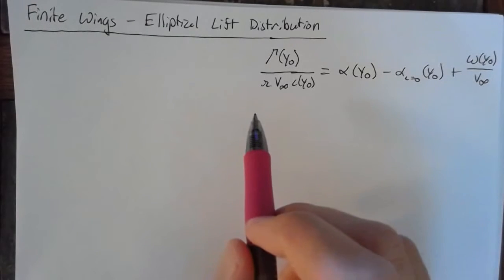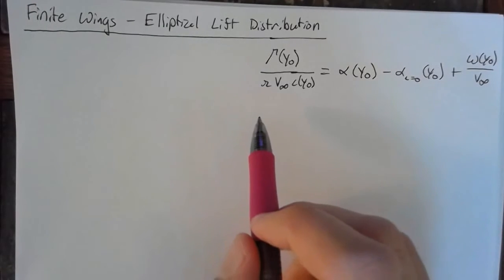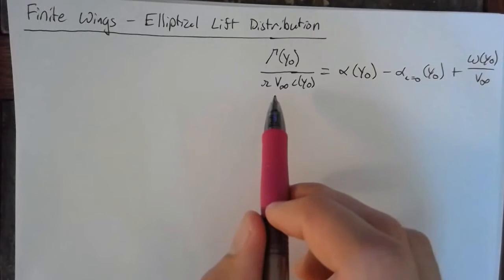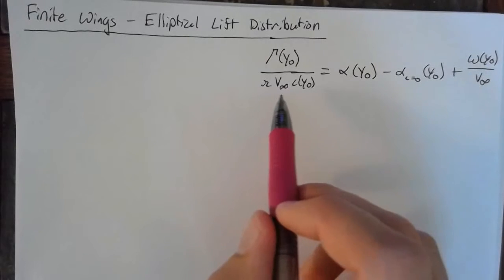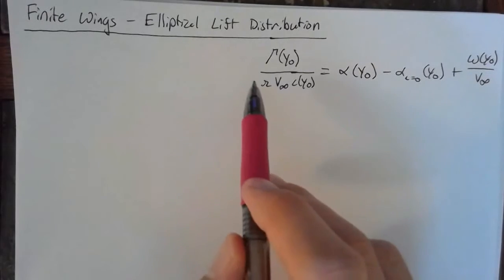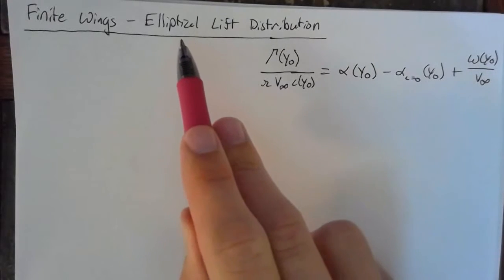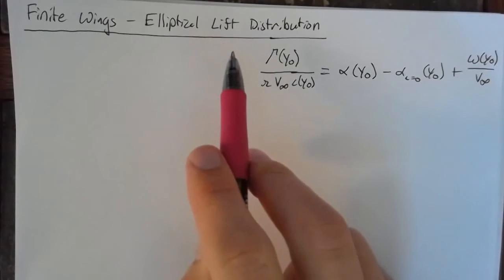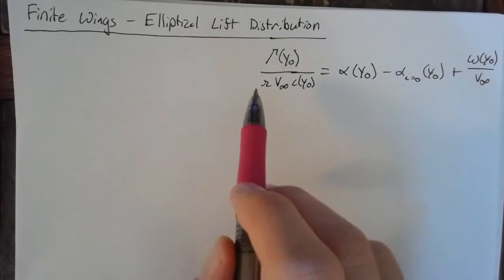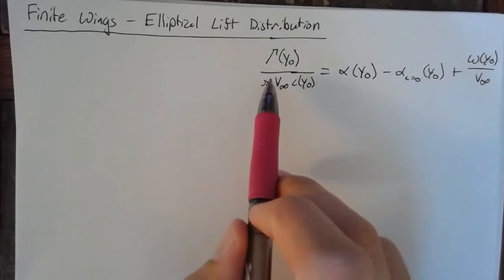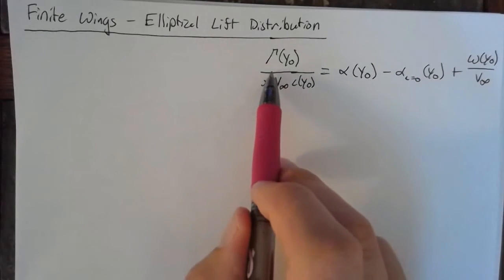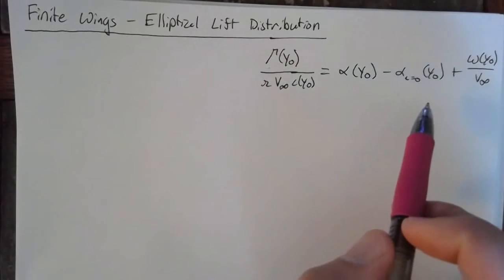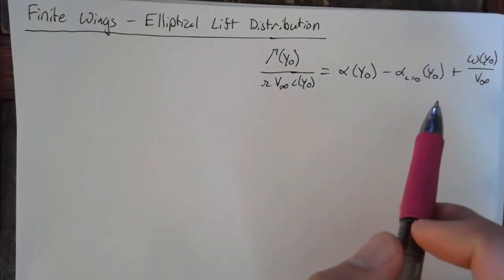In this lesson, we're going to be looking at the fundamental equation of finite wings theory and applying specifically an elliptical lift distribution to that. This means that we are going to be assuming a value of gamma and then seeing what comes out of this equation.